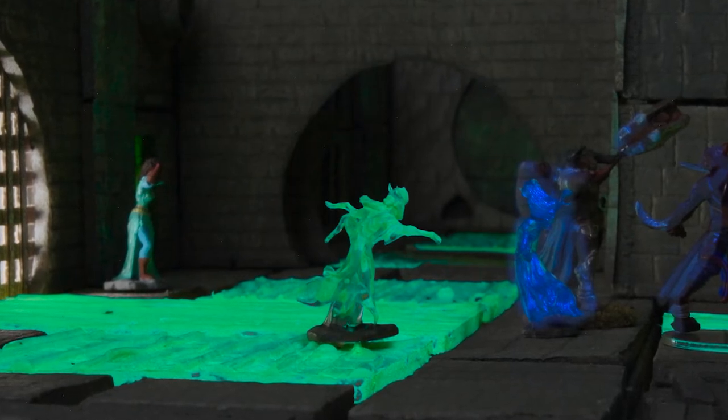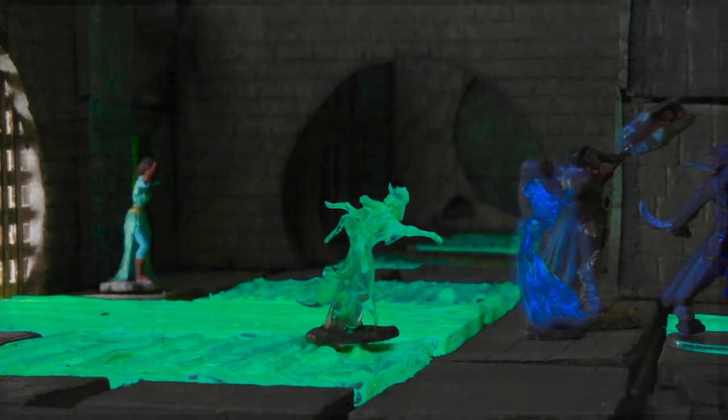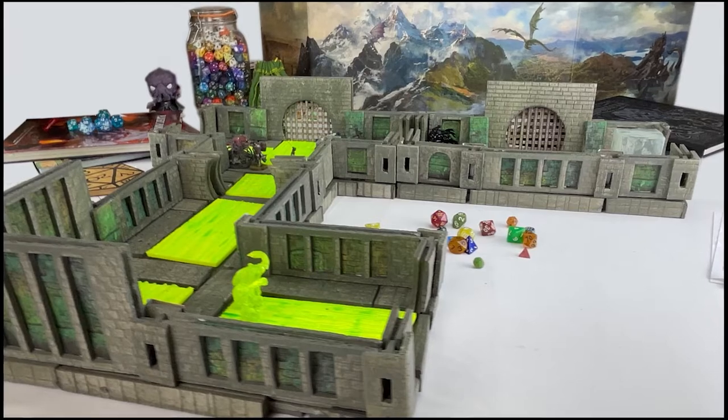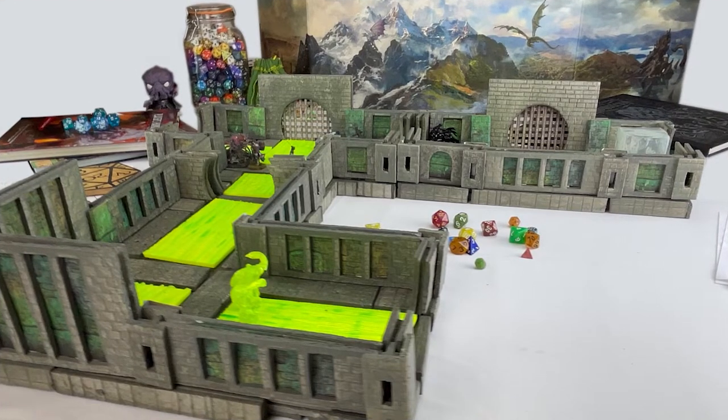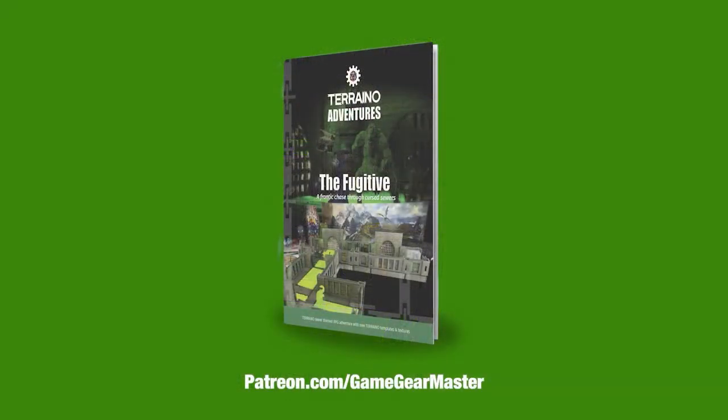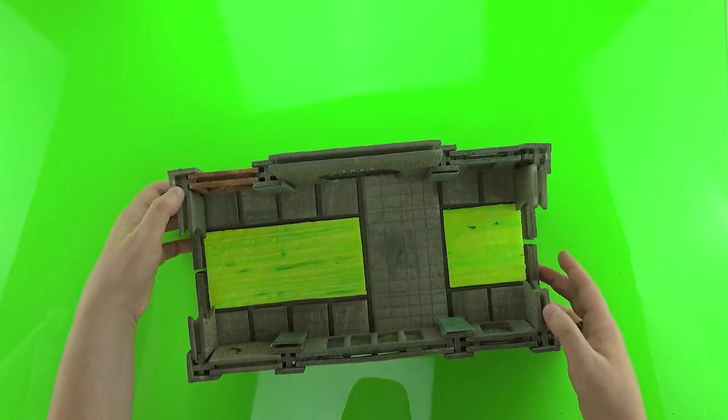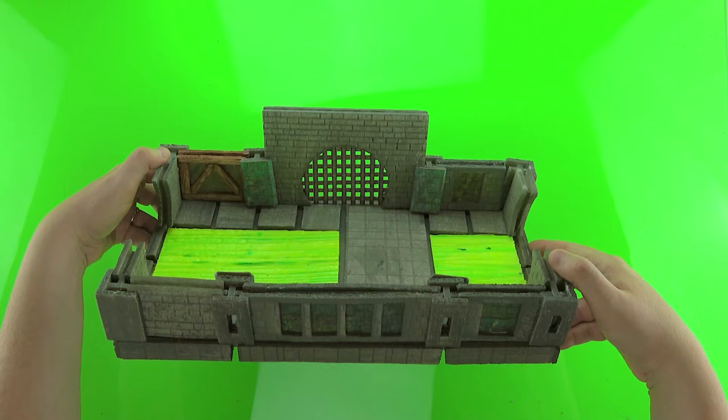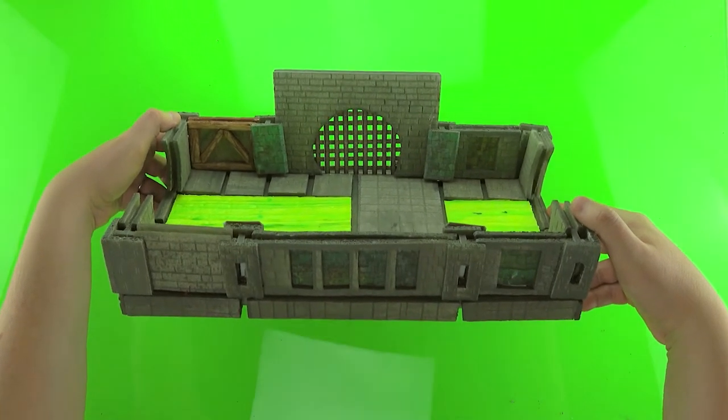In this video we're going to use the sewer pipe wall template that comes along with the Torino Adventure The Fugitive, which you can get right now at patreon.com/gamegearmaster. We're also going to make a wall with a pipe using bits from a glue stick. So let's get started.